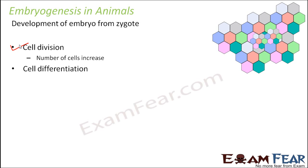But only by increasing the number of cells, you cannot form an embryo. In case of human beings, the zygote formed inside the female body has to develop into a small baby. A human being is not just an aggregation of cells — we have different tissues performing different functions and different organs for specific functions. So you need cell differentiation as well, after cell division has produced a lot of cells.